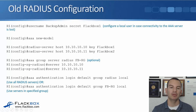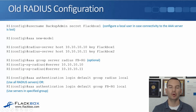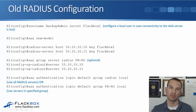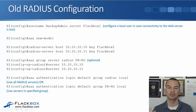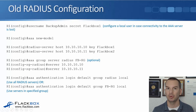Alternatively, if you have specified a particular group, you would say 'aaa authentication login default group FBRG local'. With both of those options, RADIUS is the first choice, and if the RADIUS servers cannot be reached, it falls back to using the local username. That's how you configure authentication. You can also configure authorization with 'aaa authorization' — if you go to the CCNP level or the security track, you'll see those extra AAA commands. That is the old configuration.